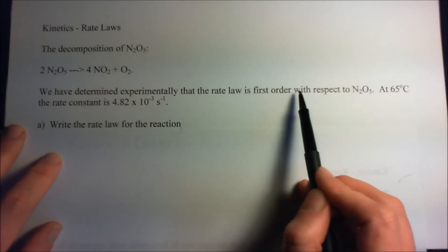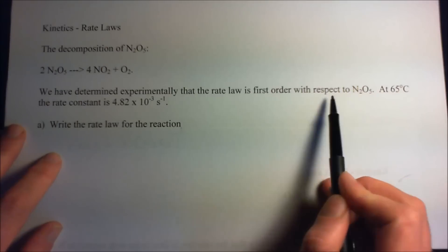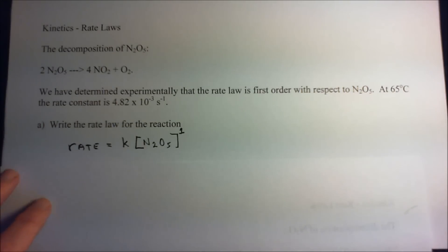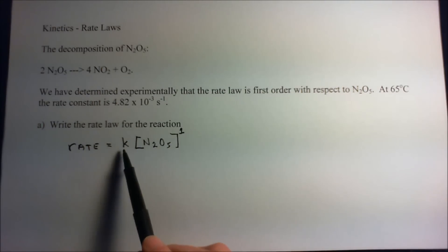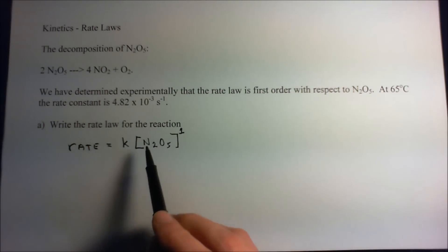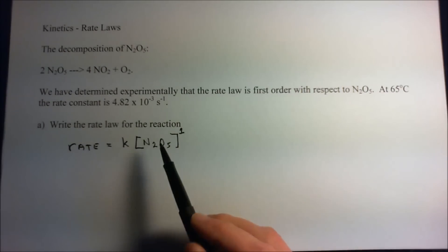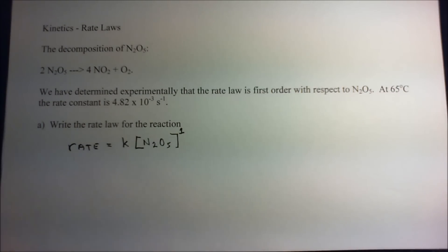So we've been told the rate law is first order with respect to N2O5. So this is in words, it's just saying that the rate is first order in N2O5. That's what first order means, is that exponent up there, and it's some constant, the rate constant, times N2O5 whatever the concentration is to the first power, and that is the rate.